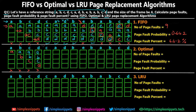Moving ahead, the CPU wants page C — C is already there, so no page fault. I write the frames as A, B, C, D. Similarly for the next steps requesting A, D, and B — all pages are already in memory, so no page faults. I write A, B, C, D for each of those steps as well.